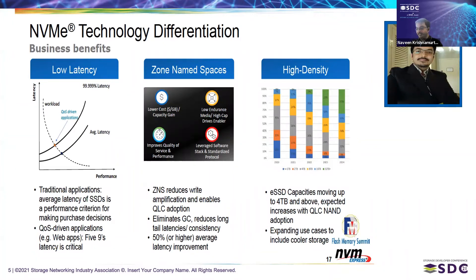Zoned namespaces support available with NVMe reduces write amplification associated with most flash technologies. It also eliminates garbage collection, which is a significant overhead on the device side due to the flash erase-before-write cycle, and reduces long-tail latencies resulting in substantial latency improvements. On the capacity front, these devices are moving up to 4TB and more with QLC NAND adoption and are the choice for cooler, more efficient storage.